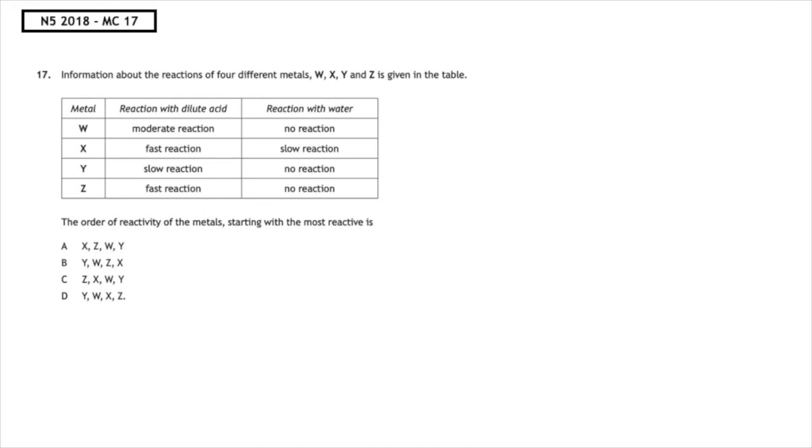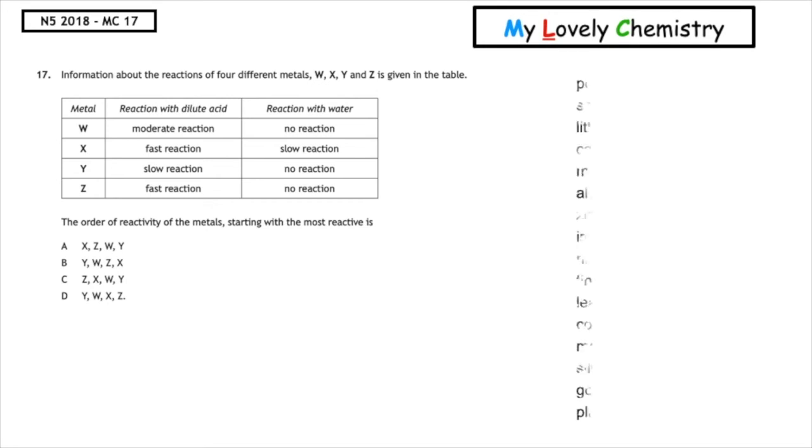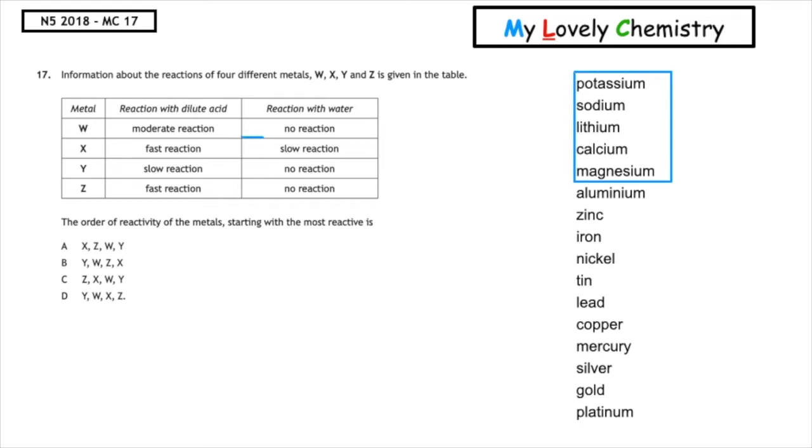This past paper question is from National 5 2018 Multiple Choice 17. Information about the reactions of four different metals W, X, Y, and Z is given in the table. The order of reactivity of the metals starting with the most reactive is... The most reactive metals will react with water first. Looking at the reaction with water column, we can see that the only one that has a reaction is X. This means this metal must be the most reactive. The only one in our list that begins with X is multiple choice answer A.